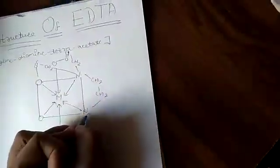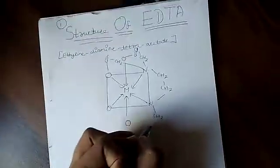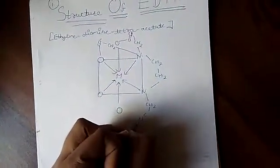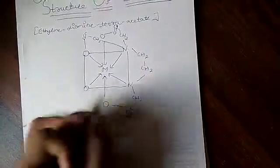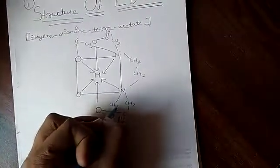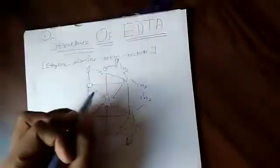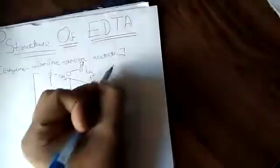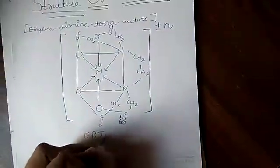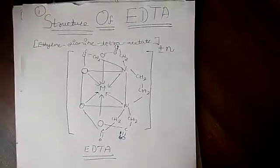Here also CH2, C double bond O, O, and CH2, C double bond O, O. Then make a big square bracket and write plus or minus N. See, this is the structure of EDTA. See carefully so we can move on to the next structure, Bakelite.